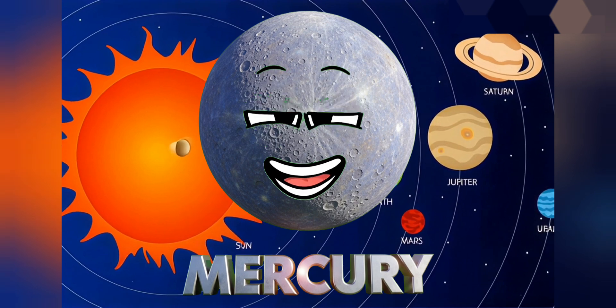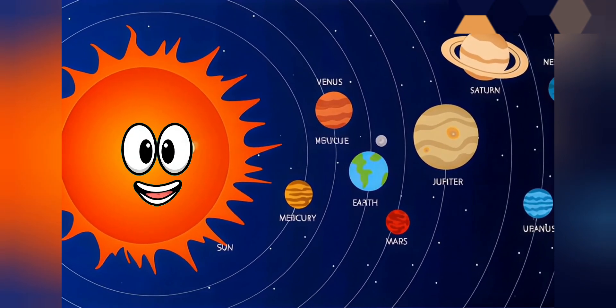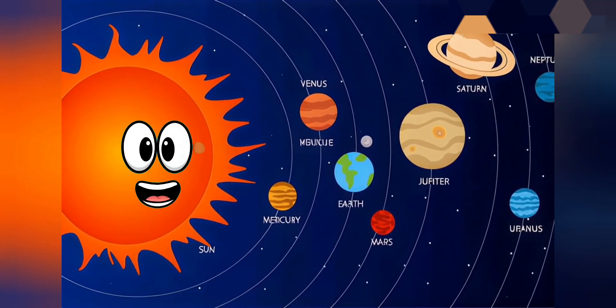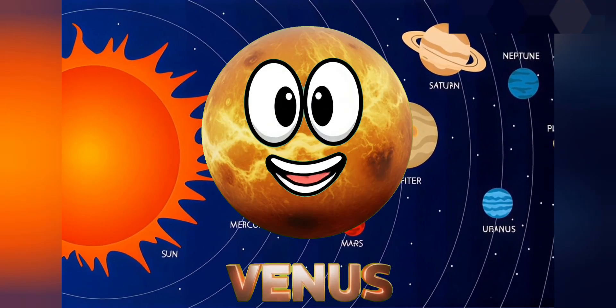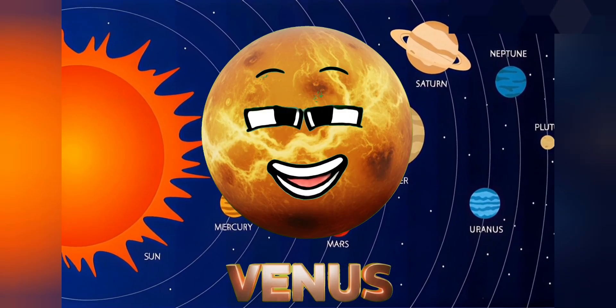Venus, Venus, Venus, where are you? Here I am, here I am, shining through. I'm Venus, I come in two. Hot and cloudy, golden hue.